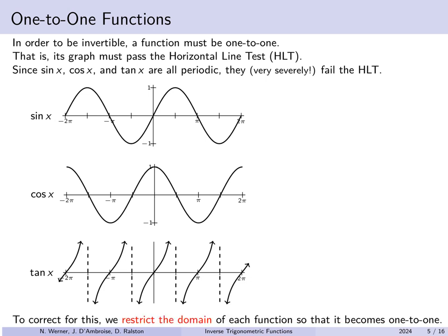To get around this problem, we're going to limit the domain of the function so that it is one-to-one, while still having the full range of the original. For the sine function, we restrict the domain to minus pi over 2 to pi over 2. That produces a portion of the graph where any horizontal line will intersect the red portion exactly once, so this restricted sine does pass the horizontal line test.